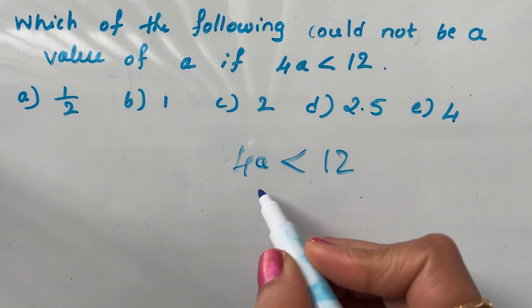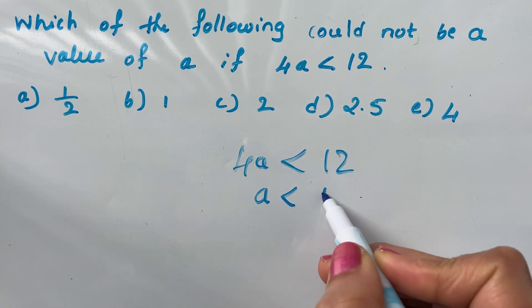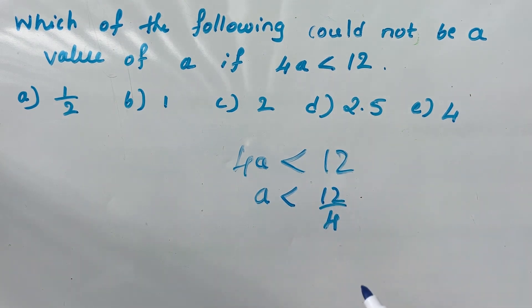4a less than 12 means a is less than 12 divided by 4, which is 3. A should be less than 3.